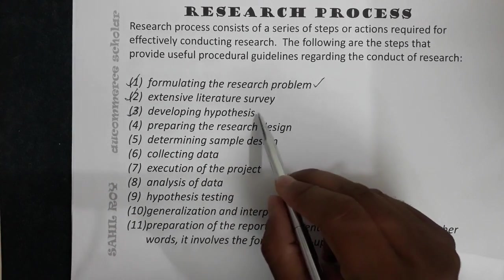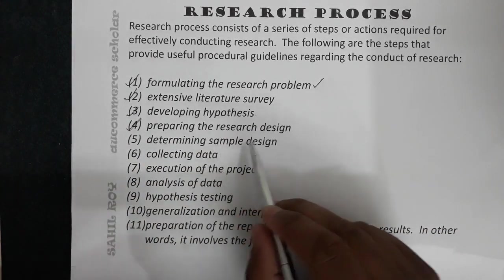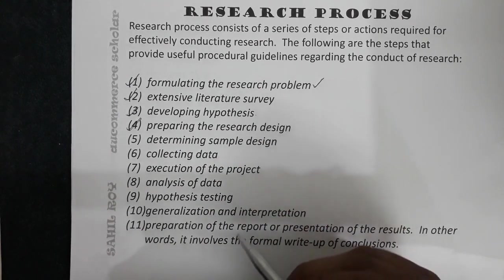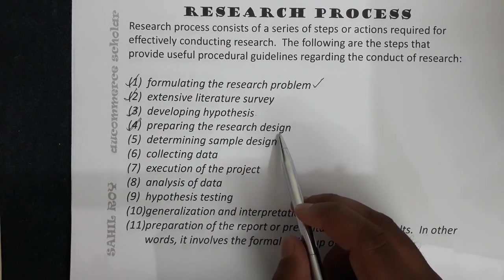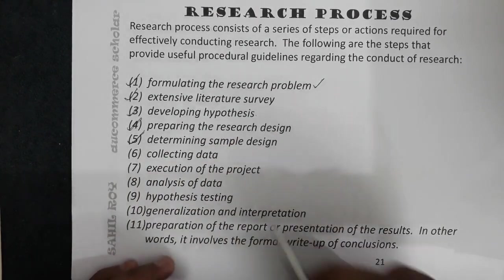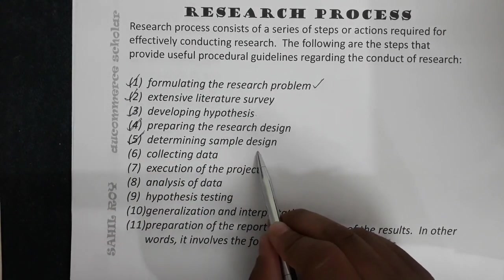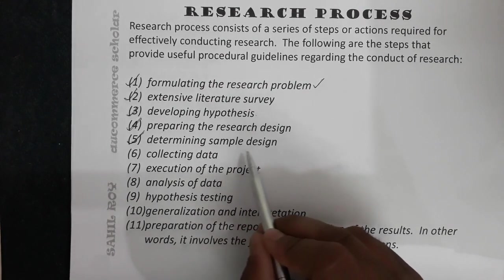The fourth step is preparing the research design. Once you have developed your hypothesis or decided your objectives, you prepare how you will conduct the research. The fifth step is determining the sample design — deciding the sample size, how many people or items are in the sample, and how you will obtain the sample.